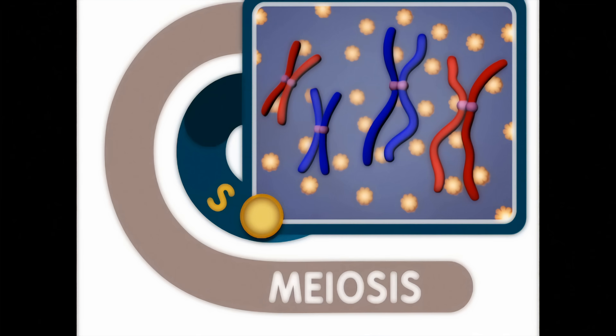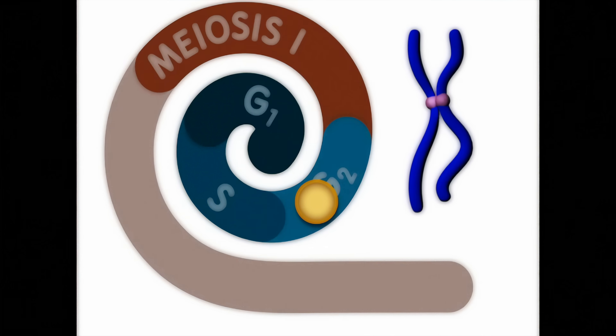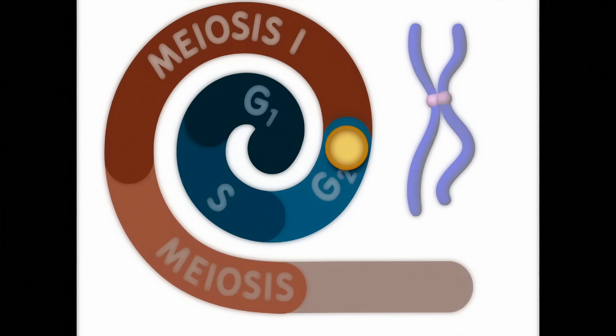The duplicated germline chromosomes are called sister chromatids. These chromatids remain attached to each other until the second cell division event in meiosis.